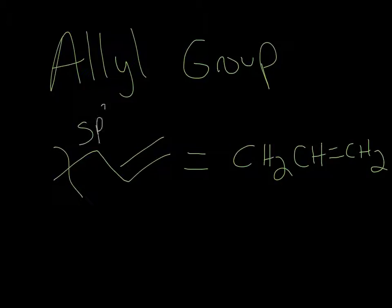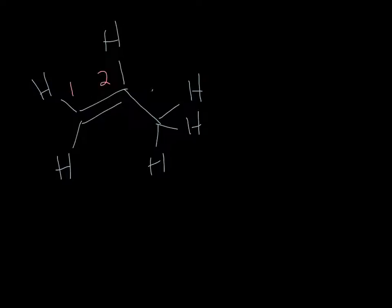We have an SP3 hybridized carbon with a double bond next door, so two SP2 hybridized carbons. I'm going to draw an example of the simplest allylic system, which is 1-propene, and I'll draw the hydrogens on here. I've got one, two, three carbons. The double bond is the highest priority, so this is 1-propene.